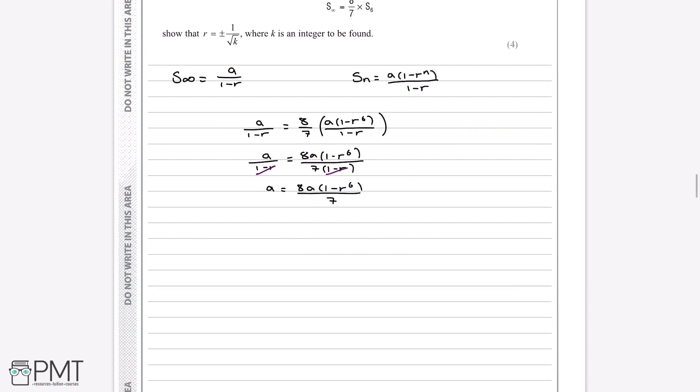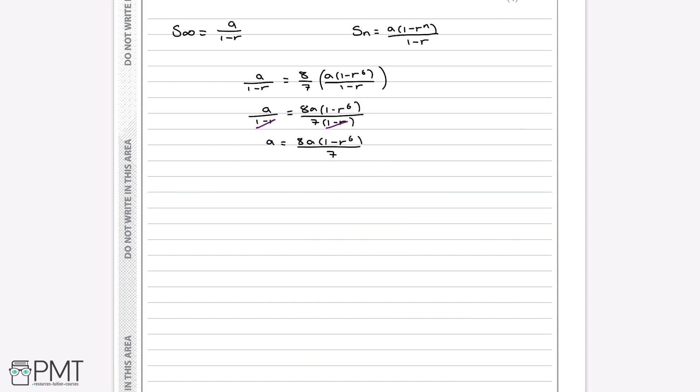Now there's also an a on both sides, so if we divide both sides by a, we're left with 1 = 8(1-r^6)/7, and then if we multiply both sides by 7 and divide by 8, we'll be left with 1-r^6 = 7/8.